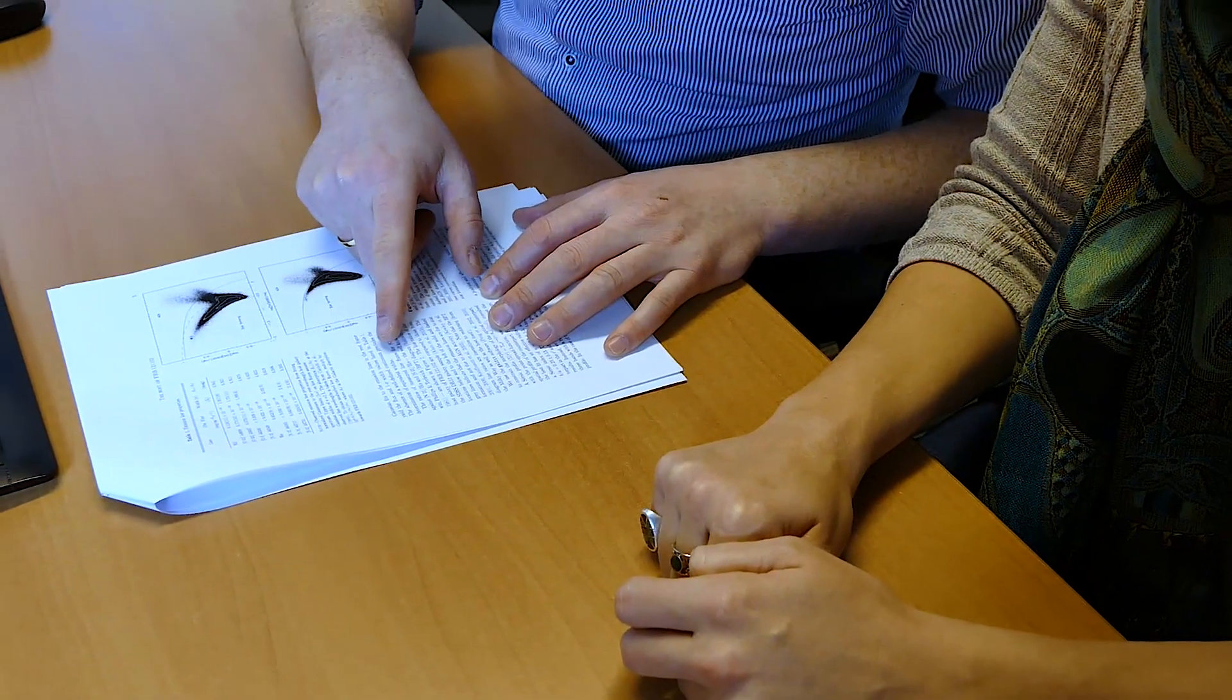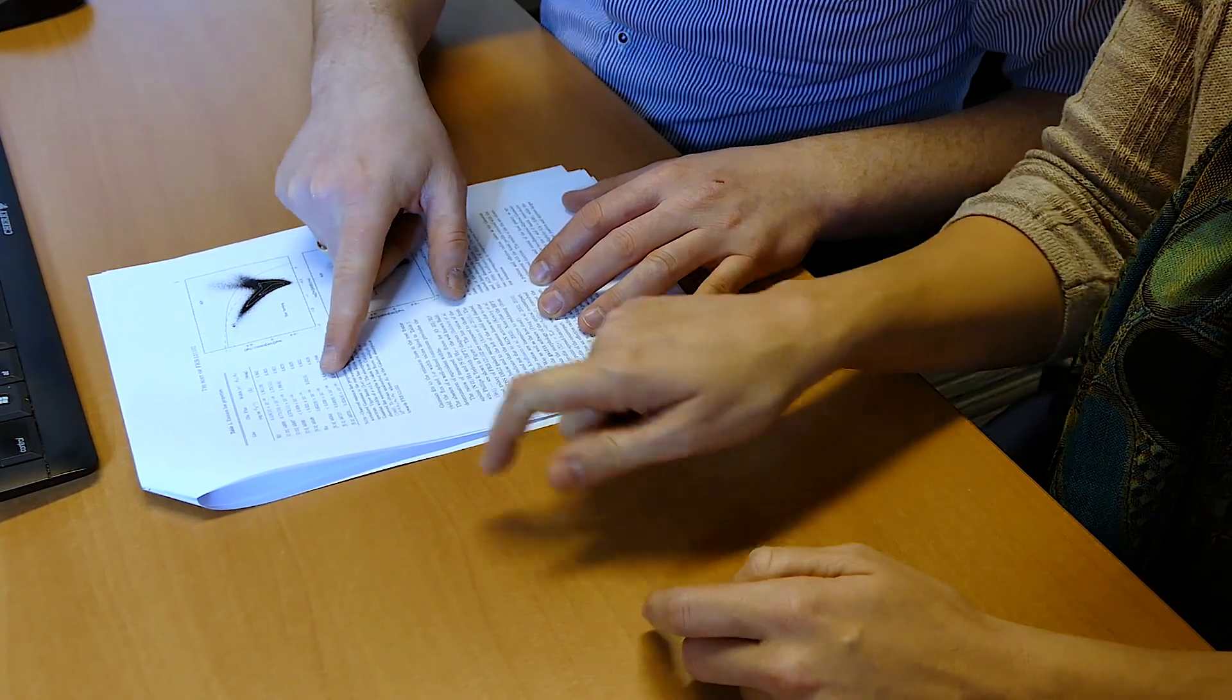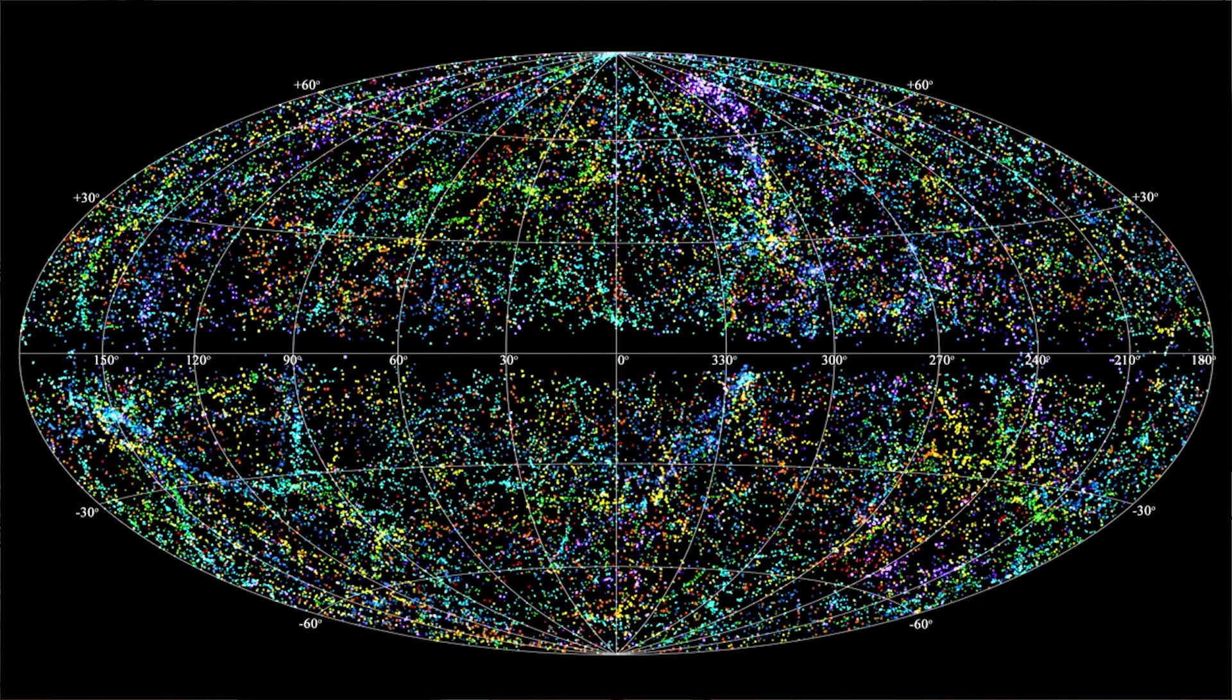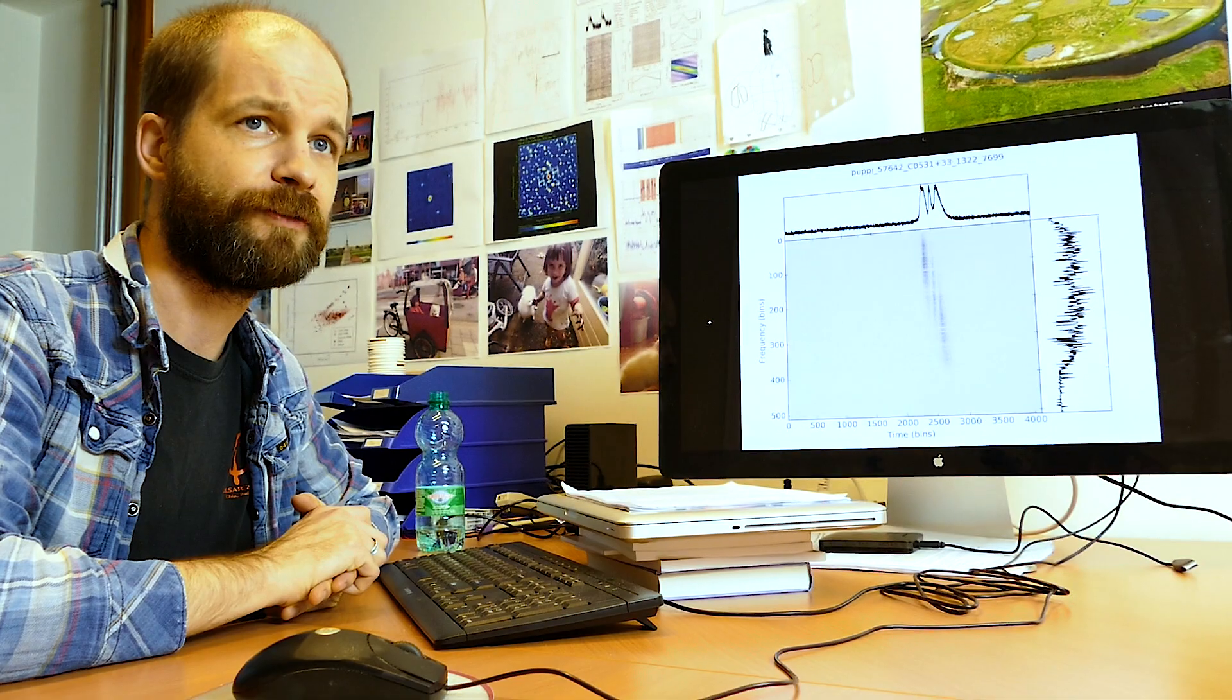Using the VLA and the EVN, we've been able to make the major breakthrough of localizing the position of these bursts on the sky. Using Gemini, we've figured out what galaxy they're coming from and characterized its properties. Now, to really understand what's producing the bursts, we're going back to Arecibo and studying the bursts in detail, their properties in both time and frequency, to understand what kind of physics is responsible. That will be the next breakthrough.